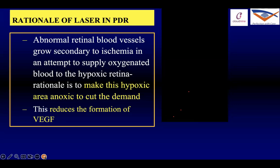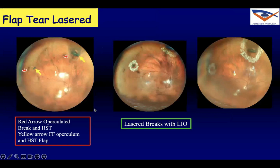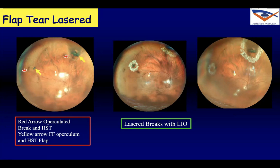Those are the two basic methods of doing laser PRP. Here you have a patient with a horseshoe tear and another operculated tear with a free-floating operculum. We go ahead and do laser with the LIO and a laser indirect ophthalmoscope. You can give one or two rows of laser burns around the break. What is important is to do laser in the area where there is no fluid — it should be done immediately when the patient walks in, with no postponement and no rescheduling.